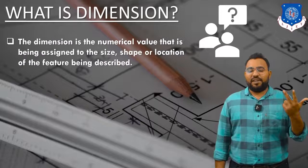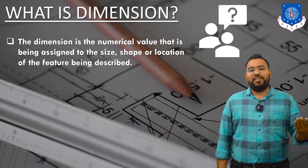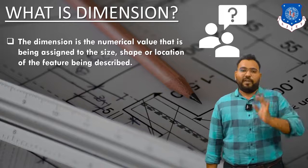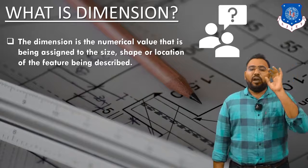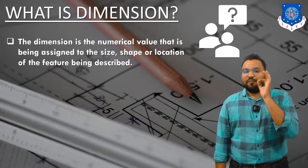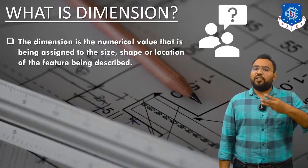Let us read the definition on your screen. A dimension is the numerical value that is assigned to the size, shape, or location of the feature being described. So we get to know three things: first, dimension is a numerical value; second, this numerical value is assigned to either size or shape; and third, it is also assigned to the location of the feature being described.